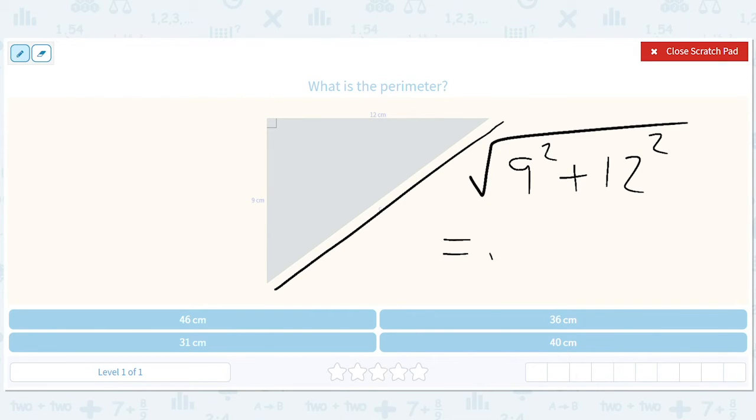By doing 9 squared plus 12 squared, square root. So this is going to be 81 plus 144, square root.